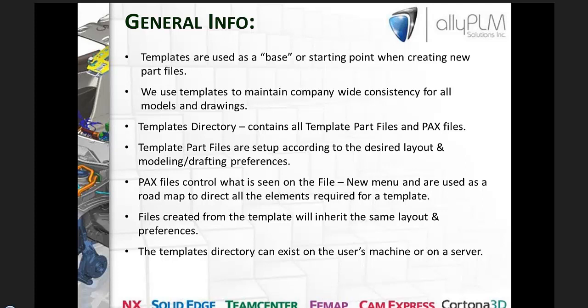Template part files are set up according to the desired layout and modeling and drafting preferences — not only the look and feel of the model, but also what my preferences are. The PAX file controls what is seen on the File > New menu and is used as a road map to direct all the elements required for a template, including a JPEG preview, the actual seed file, and other information like a description. Files created from a template will inherit the same layout and preferences.